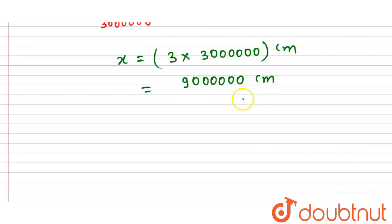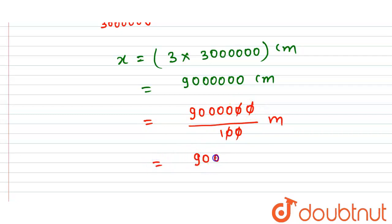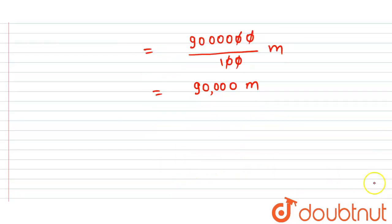Now, to convert centimeters into meters, we divide by 100. So 90 lakh divided by 100 gives us the distance in meters. The two zeros cancel, giving us 90,000 meters.